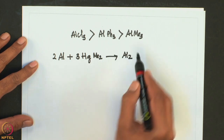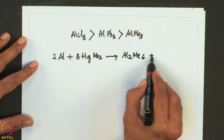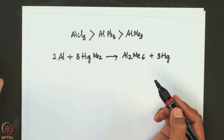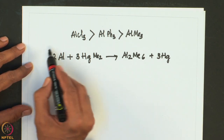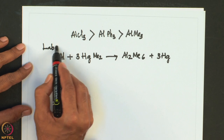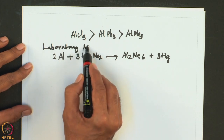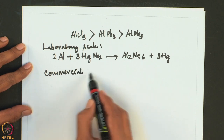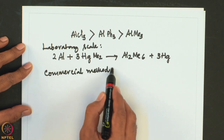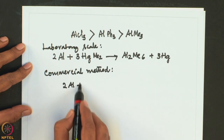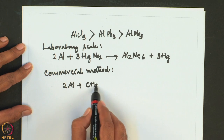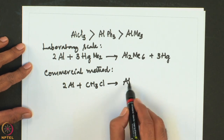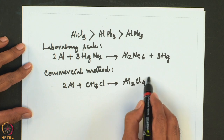This reaction gives Al2Me6. The commercial method involves treatment of aluminum with methyl chloride. Aluminum is directly treated with methyl chloride, initially leading to the formation of dichloro-tetramethyl dialuminum, Al2Cl4(CH3)4.